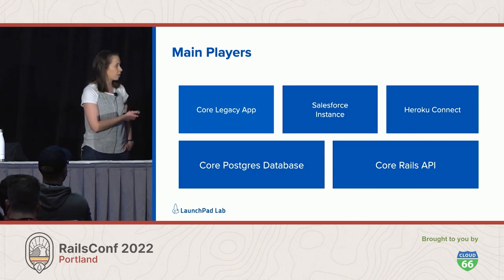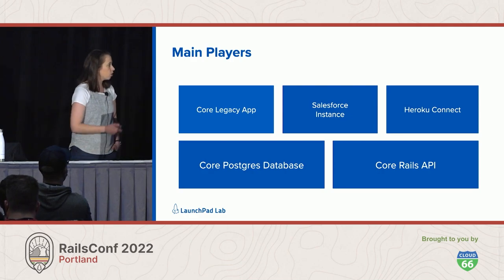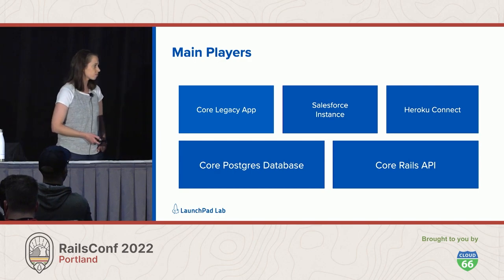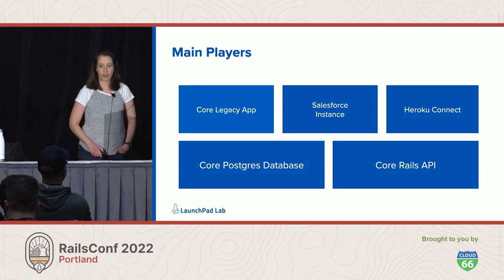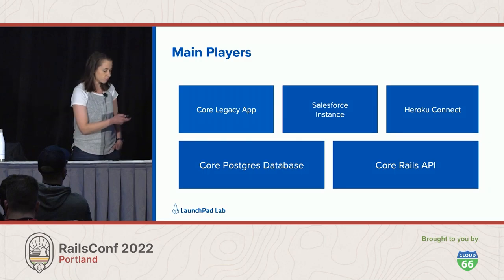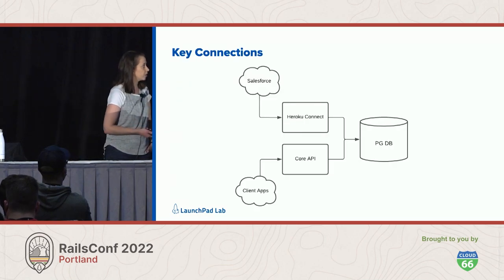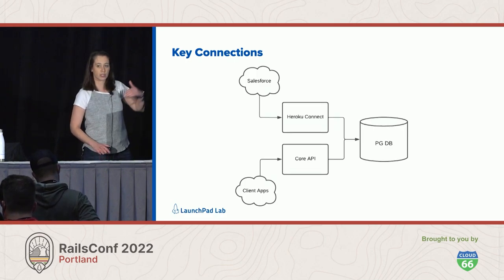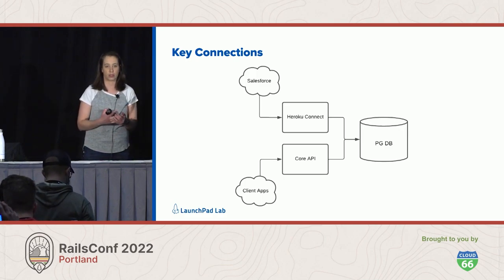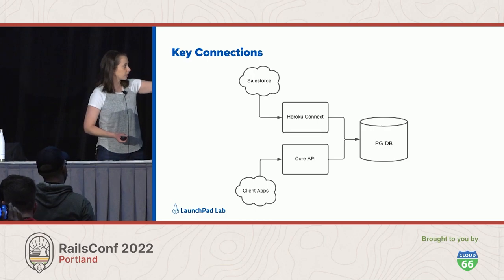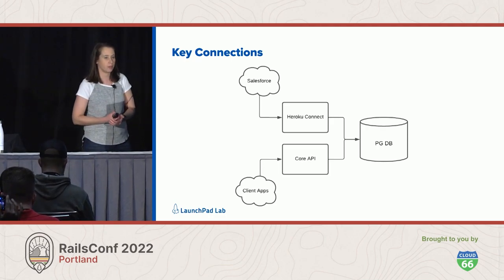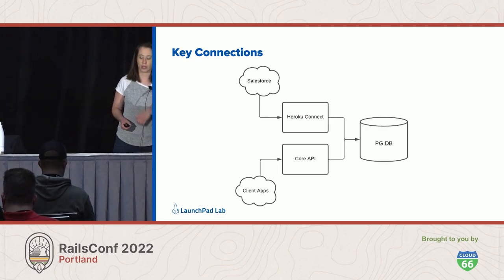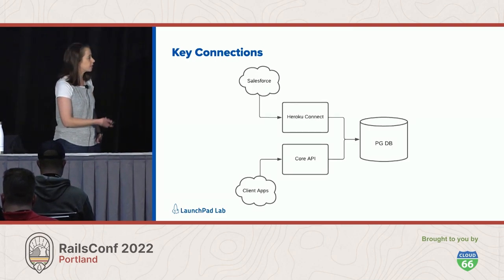The main players, once my team was engaged, are the core Postgres database that we had migrated from MySQL, and a Rails API we wrote around that database that other integrations can work with. So you've got Salesforce — their CRM tool where they work with customers and products. Heroku Connect provides a sync layer to the Postgres database, and there are a handful of apps or engines we built that also interact with this core Rails API. Keep this diagram in mind — we'll come back to see how it expands.